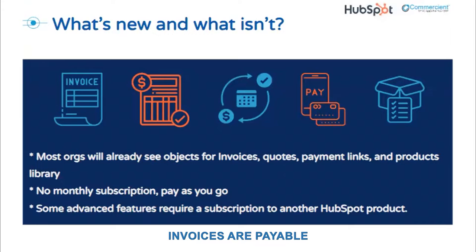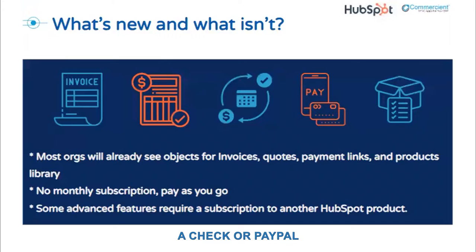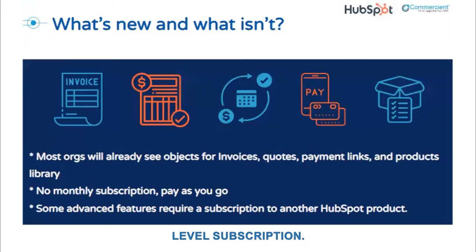HubSpot invoices are payable via HubSpot payments, either via ACH or a credit card. Payments can also be marked as paid manually if payment is received outside of HubSpot — say via a wire transfer, a check, or PayPal. While you may already see the invoice and payments tool in your HubSpot, they may not be fully unlocked yet. Invoices only allow draft invoices unless you're using the payments tool in conjunction with a Starter, Pro, or Enterprise level subscription.